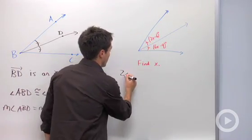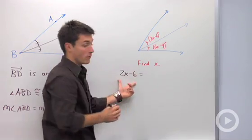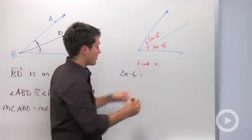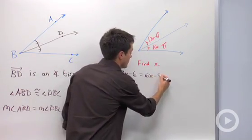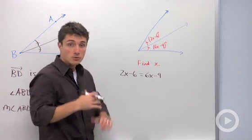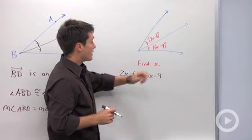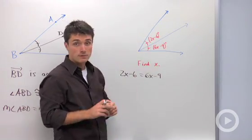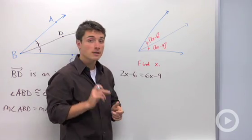You're going to say that 2X minus 6, which is one of your angles, is equal to your other angle, which is 6X minus 9. So when you see your homework problem that says find X when you have variables, just set them equal to each other if it is an angle bisector.